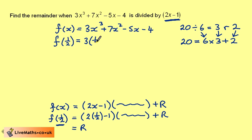So this is 3 times a half cubed plus 7 times a half squared, take away 5 times a half, take away 4. And if we have a calculator, we can do this at this stage.